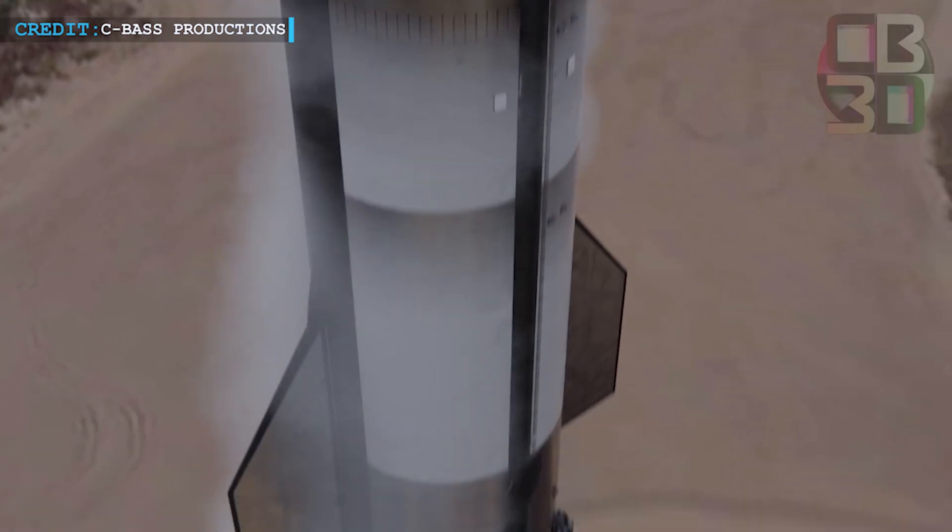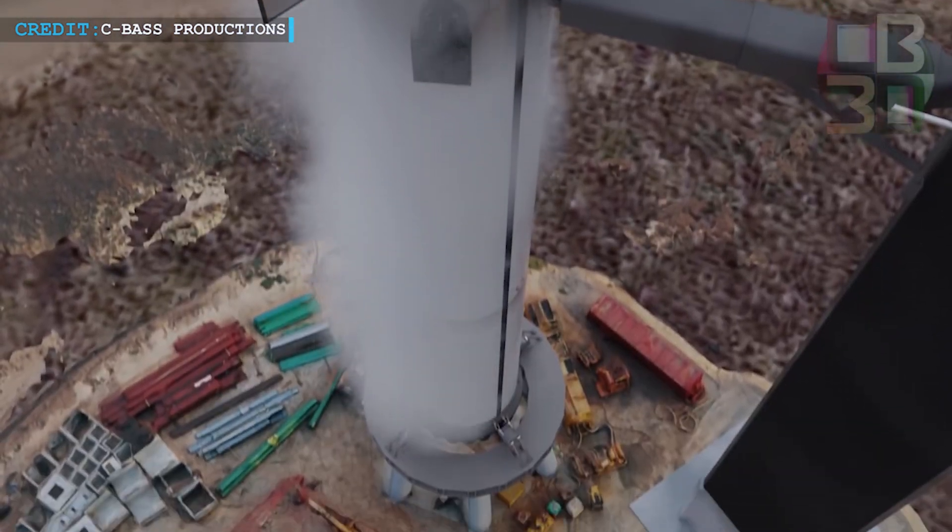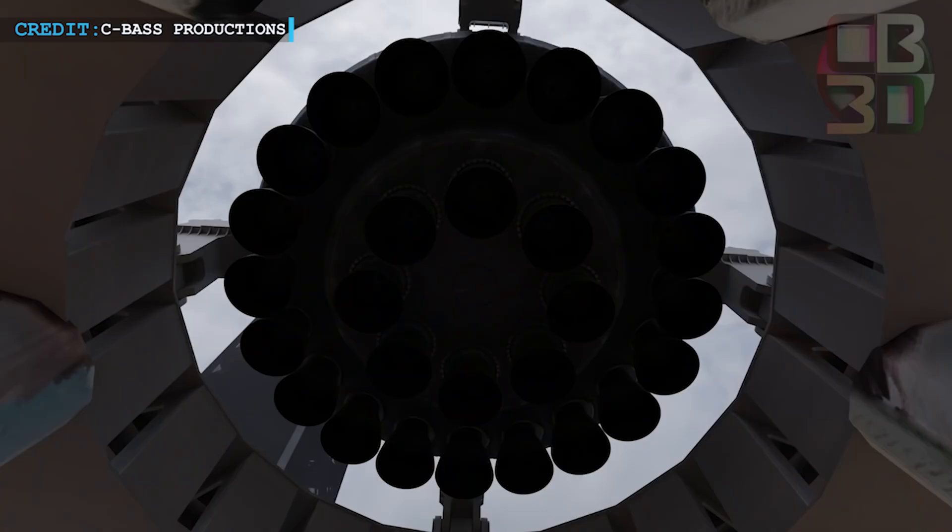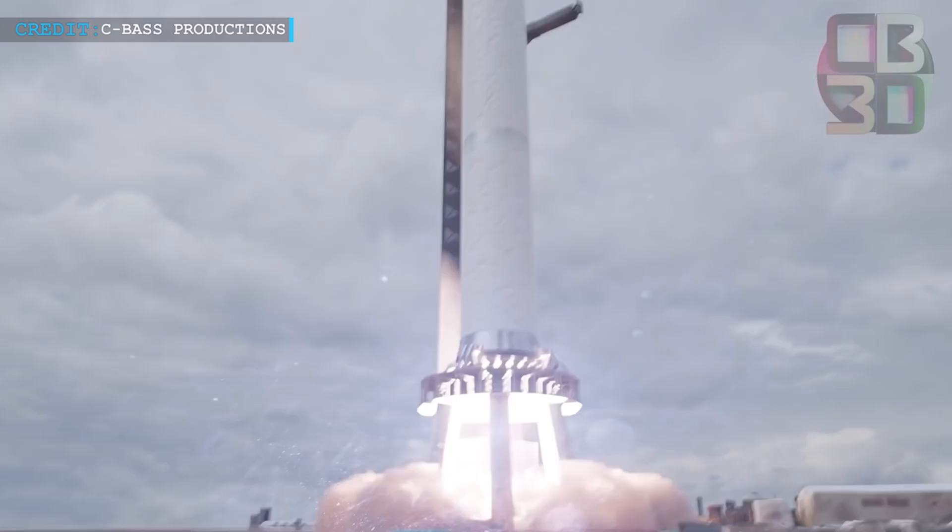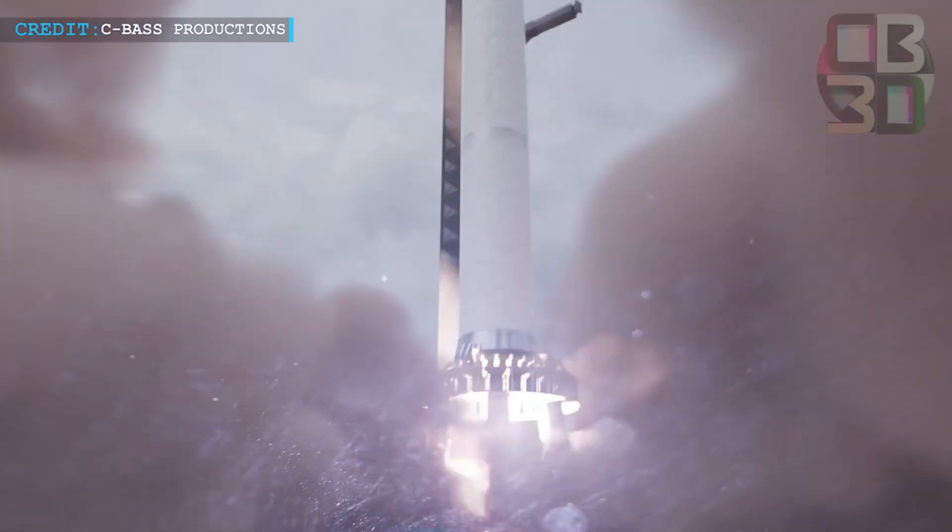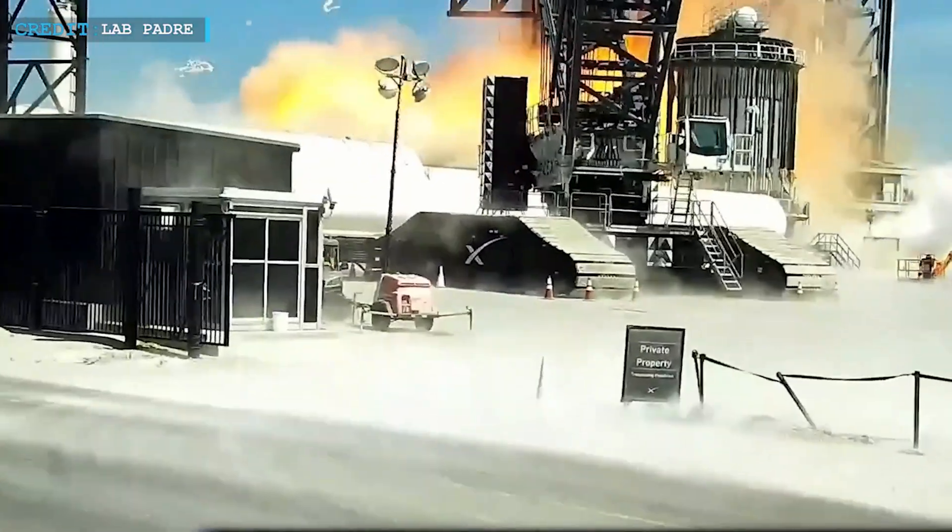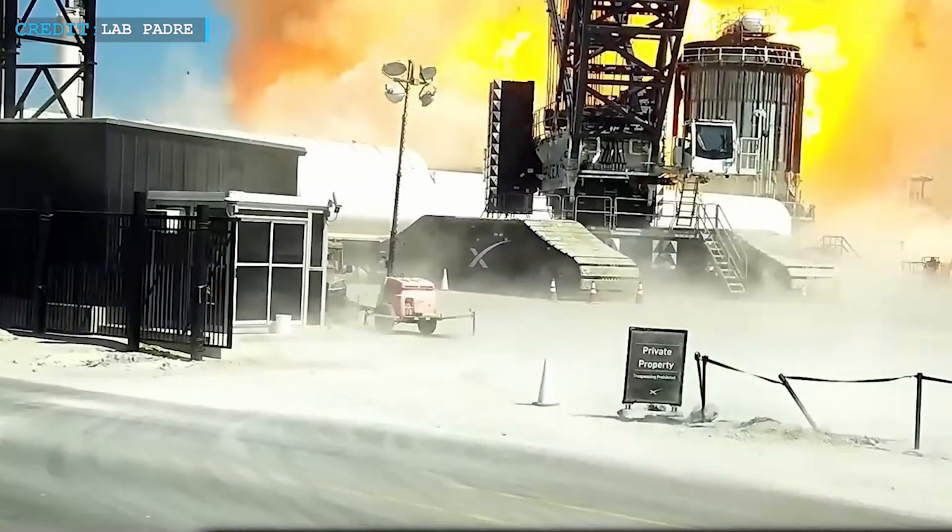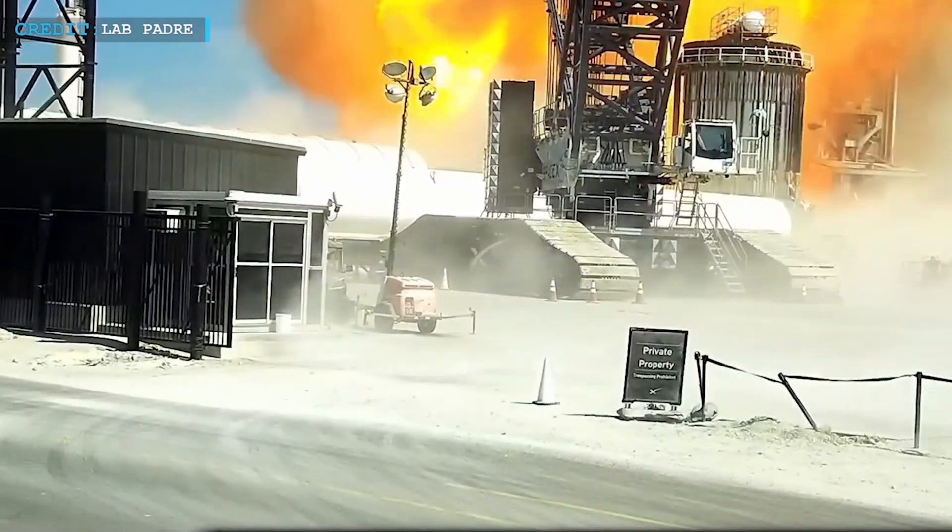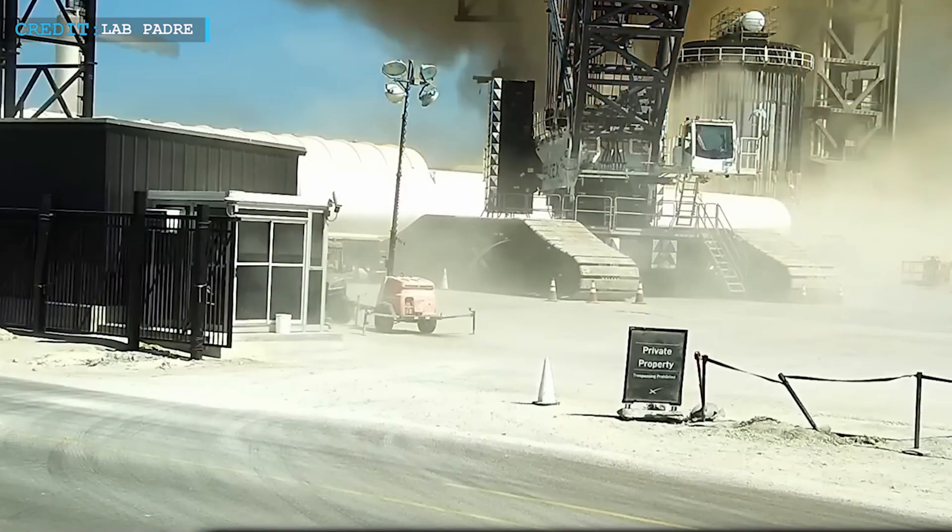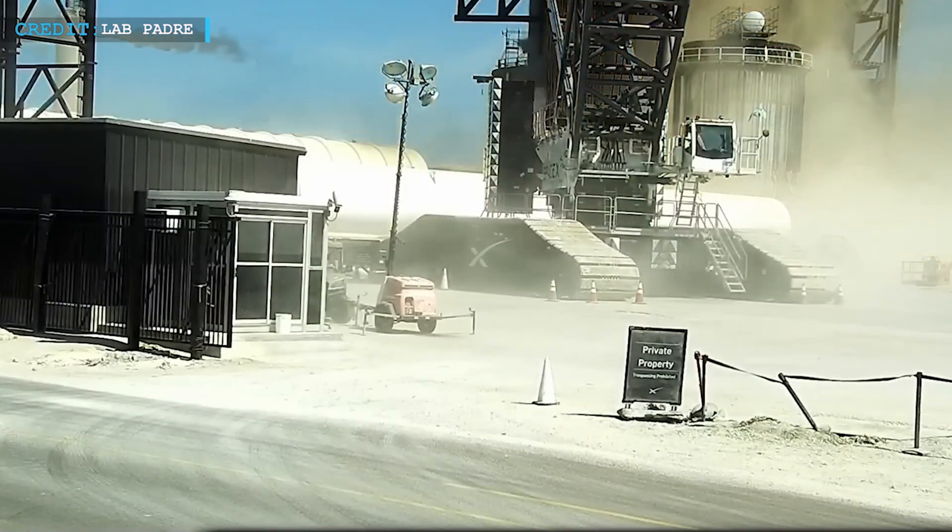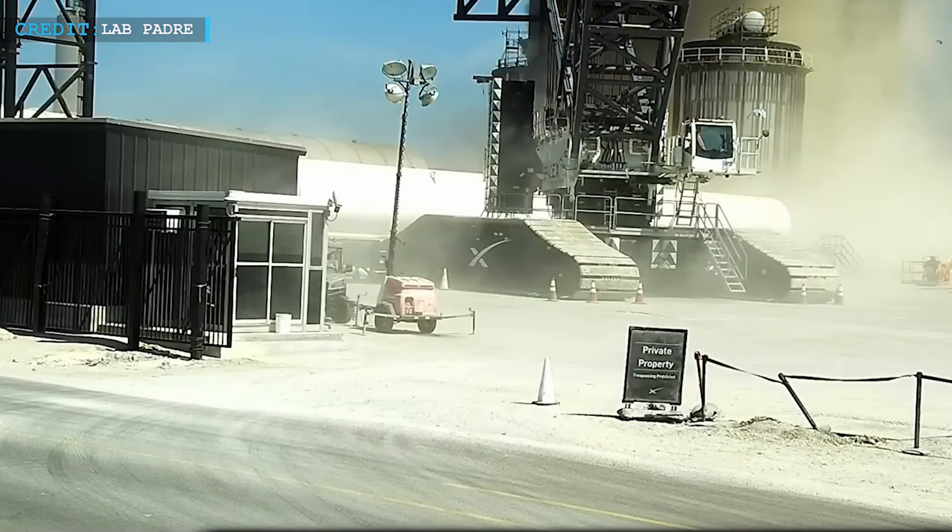This timeline is contingent on a number of anticipated achievements, including the static fire test of all 33 Raptor engines in the super-heavy booster, known as Booster 7. On July 11, while conducting a Spin Prime test, SpaceX experienced what NASA euphemistically refers to as a high-energy incident when propellants underneath the booster caught fire and caused damage. The agency claims that SpaceX fixed the rocket and took appropriate corrective action.